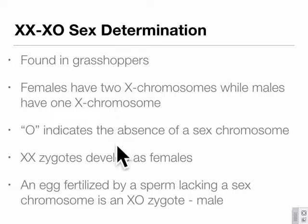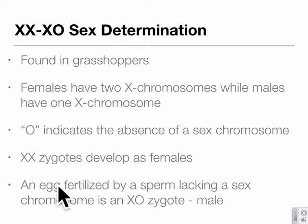Half of the sperm contained an X chromosome, but all of the eggs had an X chromosome. This provided unequivocal proof that genes are associated with chromosomes. In the XO system, two X chromosomes produces a female, one X produces a male — the O simply indicates the absence of a sex chromosome. If the egg is fertilized by a sperm lacking a sex chromosome, there will be just one X and that individual develops as male.